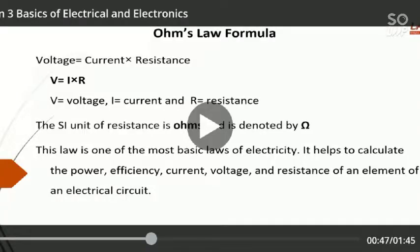Now let us come to the formula. Ohm's law's formula. Ohm's law states that voltage is equal to current into resistance. We represent voltage by V, current by I and resistance by R. So this relationship determines our resistance. And the SI unit of resistance is Ohms.